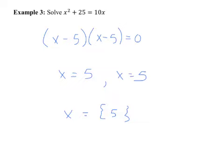On a graph, a double root appears as what's called a tangent — a point of tangency. We'll discuss what that means when we get to later examples. For now, let's jump to example four.